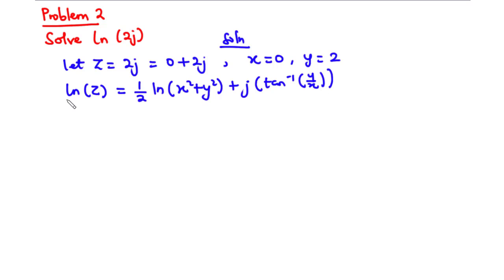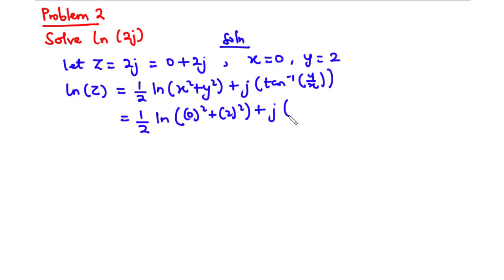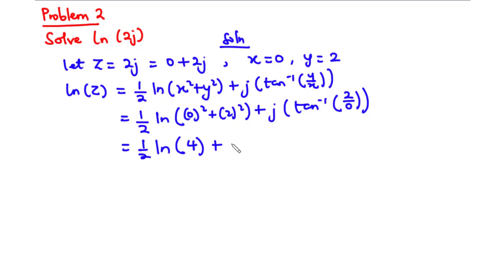Notice that the l is lowercase l. Now let's substitute the values of x and y into this equation. This becomes one-half ln of (0 squared plus 2 squared) plus j times tan inverse of 2 over 0. Since 2 over 0 is infinity, tan inverse of infinity equals pi over 2.